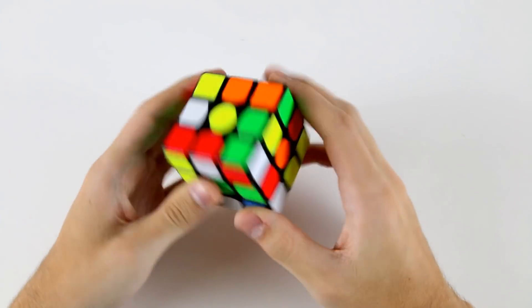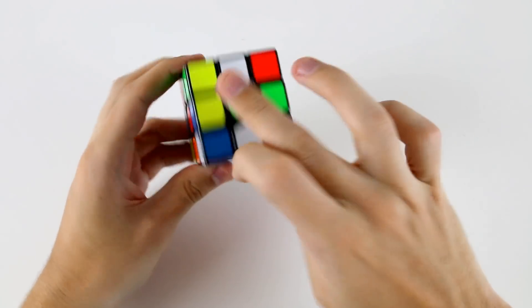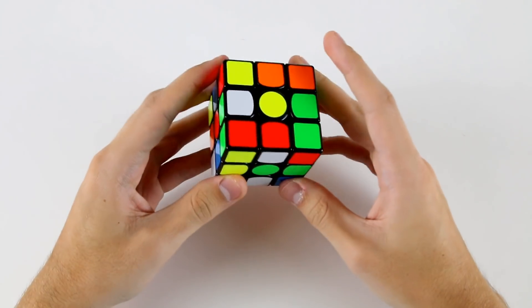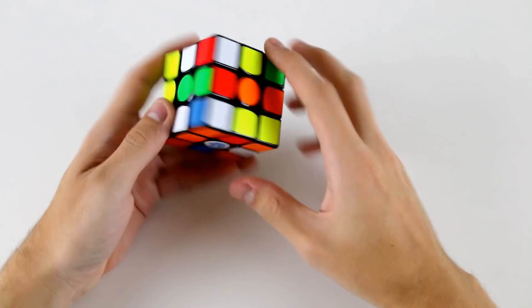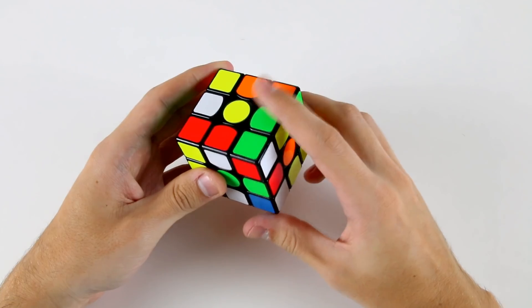Next solve with the white cross, and this is a fairly easy cross. So I've got these two which I can do an f' to set up, and I've got this one as well and this one's already solved.